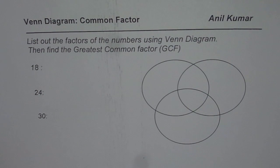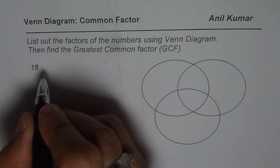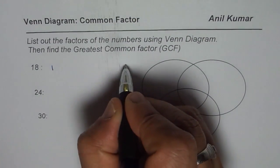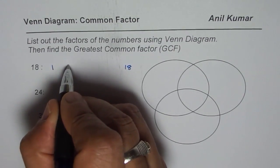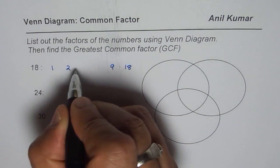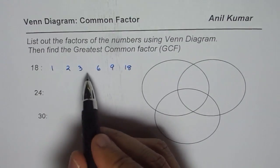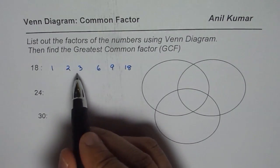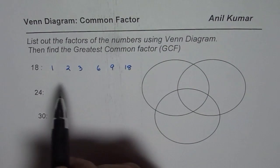Now first step is write down all the factors. 18: 1 times 18 is 18, 2 times 9 is 18, 3 times 6 is 18. So these are all the factors of 18.